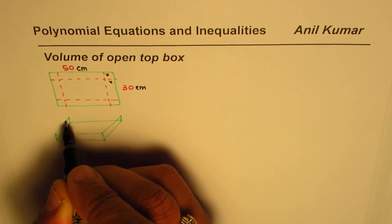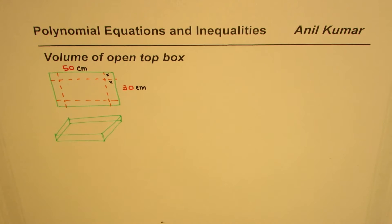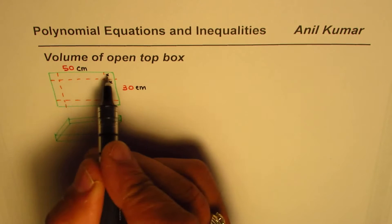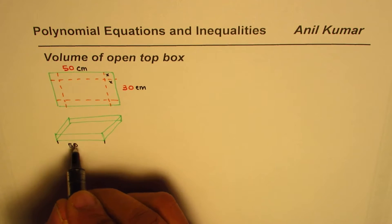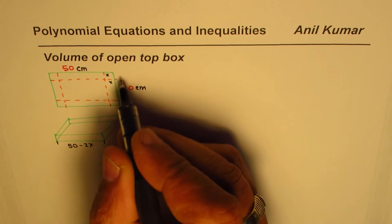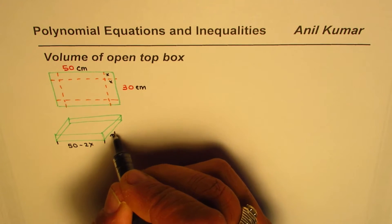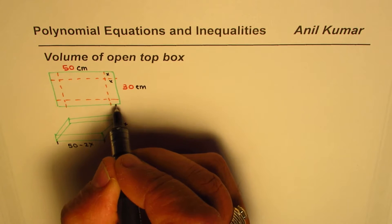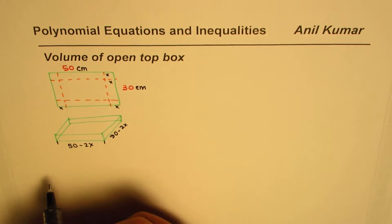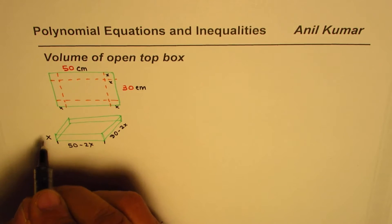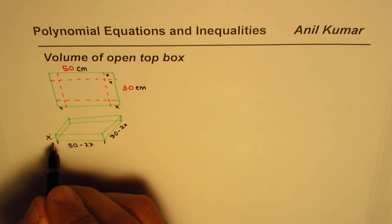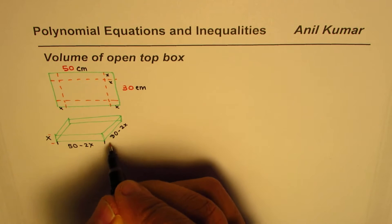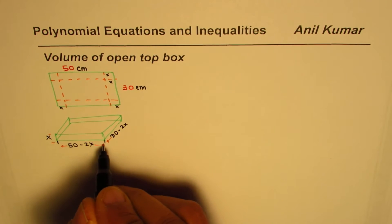The dimensions of this box: since x and x have been removed from both sides, the base length will be 50 minus 2x, the width will be 30 minus 2x, and the height will be x units. That gives you the open-top box.